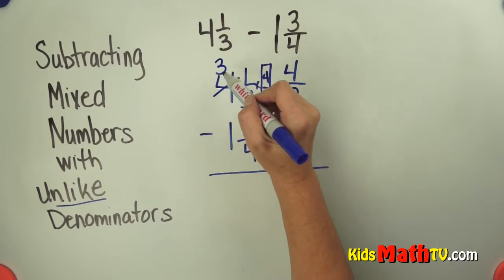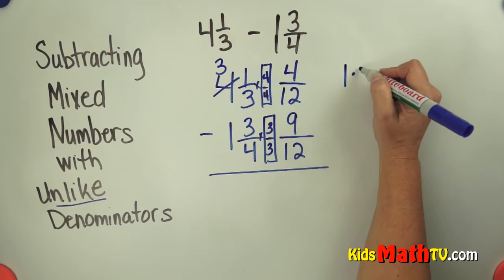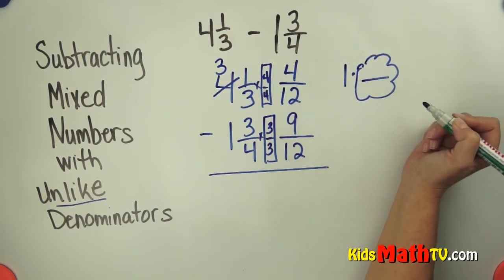And in this case I'm going to borrow 1 from my whole numbers. I'm going to take 1 away from my whole number, now I have 3. Now I kind of have this 1 that's floating around and I want to think of this 1 as a fraction.